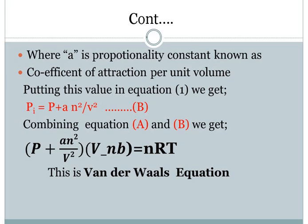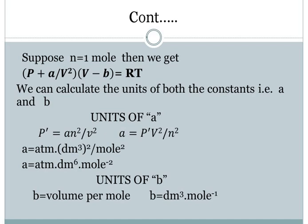When we take n = 1 mole (which is the usual assumption), Van der Waals' equation simplifies to: (P + a/V²)(V − B) = RT. Both forms of the equation — the general form and this simplified form — are important and you must remember them.